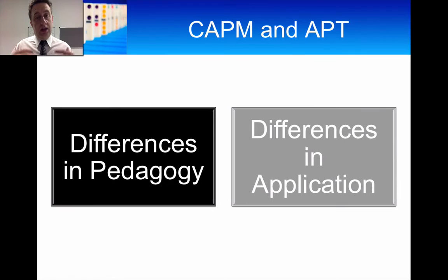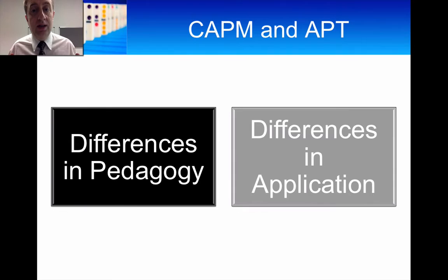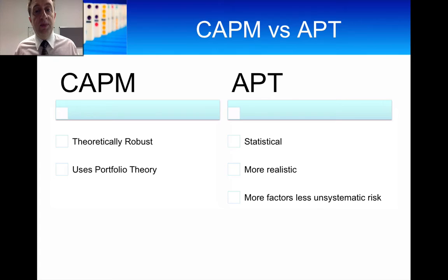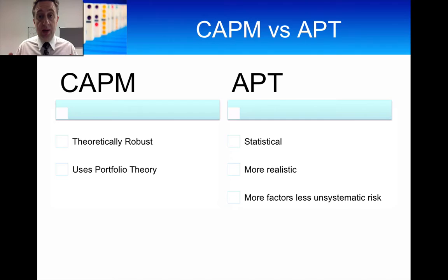Although we arrive at the exact same expression if we're using the market as a factor model, there are differences in the way in which we get that expression — in how we derive it and also in how we use it. The expression we're talking about is the one-factor market model, where you have the return on a security on the left-hand side and on the right-hand side you have the risk-free rate plus beta times the excess return on the market. That is the exact same expression as CAPM, but we have a different approach to it.